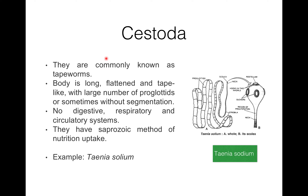The scolex is present with suckers, hooks, or both. There is no alimentary canal, no respiratory or circulatory system. They have a saprozoic method of nutrition uptake. In Cestoda, each proglottid or mature segment is monoecious, meaning each segment has both male and female organs. The life cycle of Cestoda or tapeworms is complicated, involving one or more intermediate hosts.